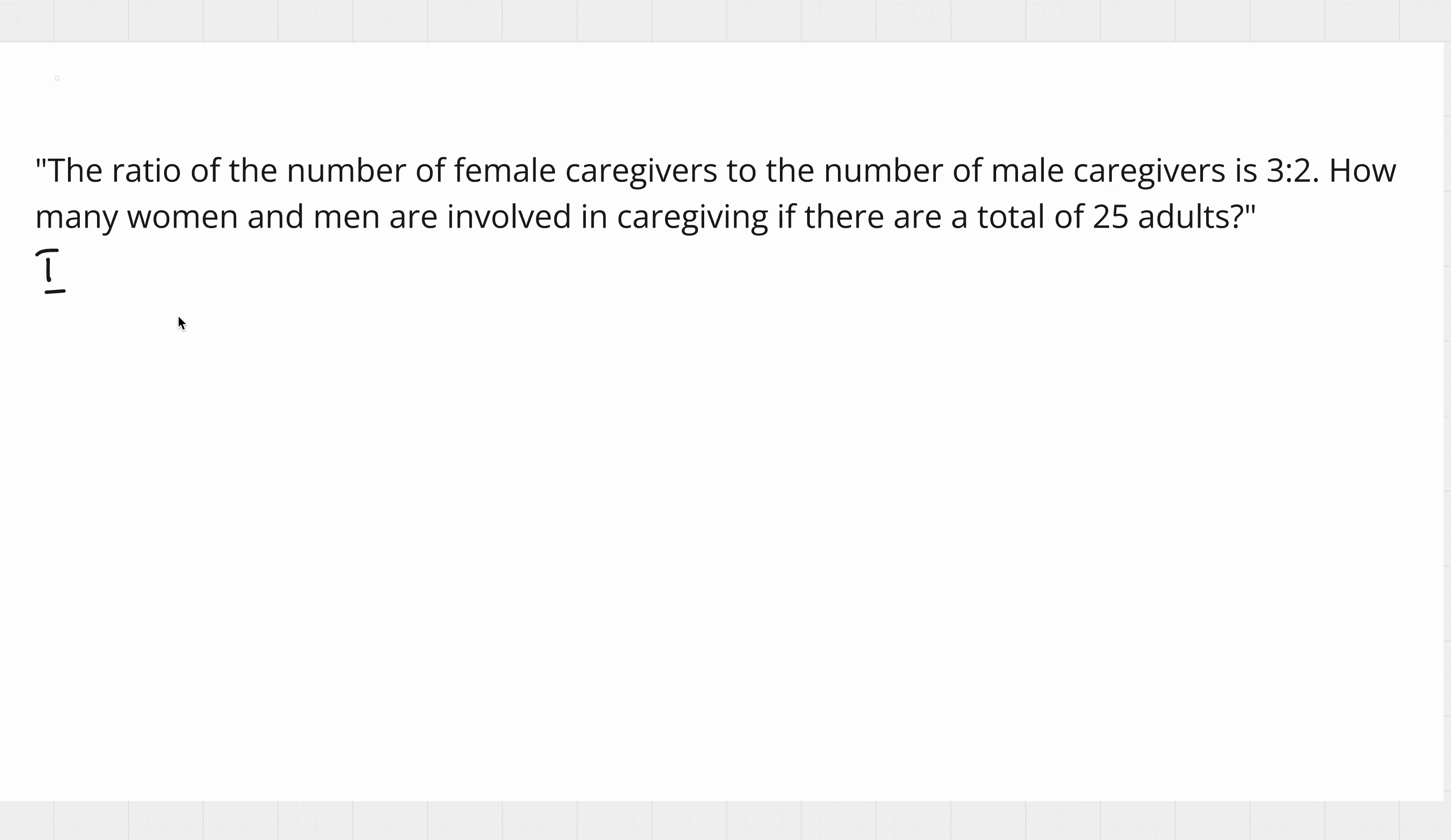The longer method is that we have the ratio of female to male given, so F to M is the same as 3:2, which is the same as writing it as a fraction. From here we can express the number of females in terms of M, so F = 3M/2.